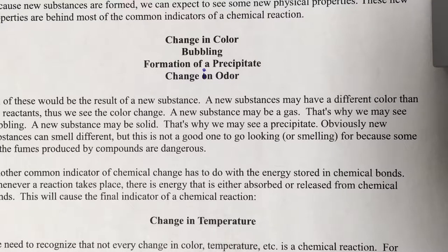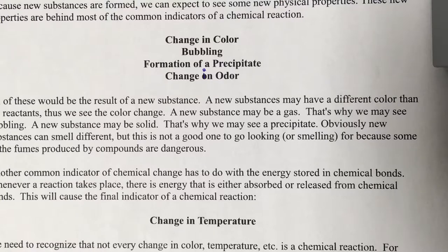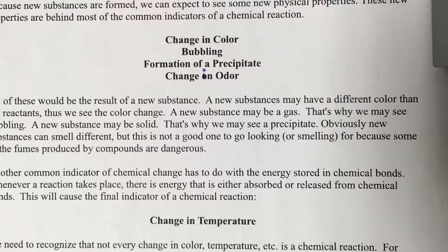The last indicator is change in temperature. Every chemical reaction involves some kind of change in energy, either an increase or decrease. That correlates to either an increase or decrease in temperature. Whenever a reaction produces a lot of excess energy, it causes the temperature to go up — we call that exothermic. Whenever a reaction soaks up energy like a sponge, we see a decrease in temperature — we call that endothermic. These are spontaneous changes in temperature.